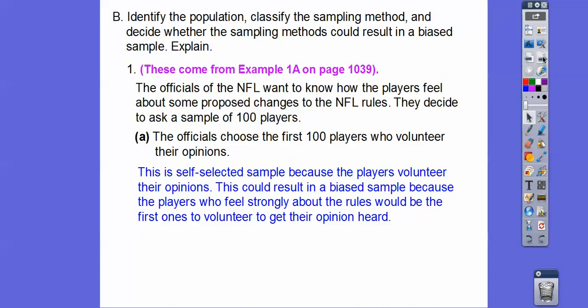And this could result in bias because the players who feel strongly about the rules would be the first ones to volunteer for their opinions. So, you know, like if you go to a restaurant and they have a suggestion box. Well, most of the time people who make suggestions are those that didn't have a good time. So it's very biased that way. So they're volunteering their suggestions.